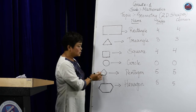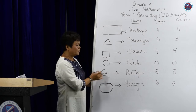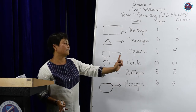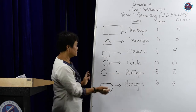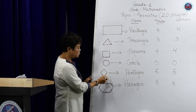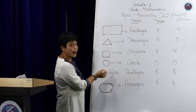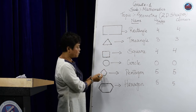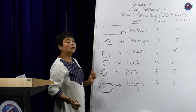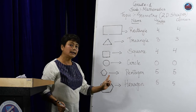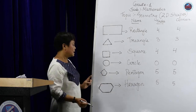Now we are going to see the pentagon. The pentagon has got five sides and five corners — that is one, two, three, four, five — and the corners are one, two, three, four, five. So, pentagon has got five sides and five corners.